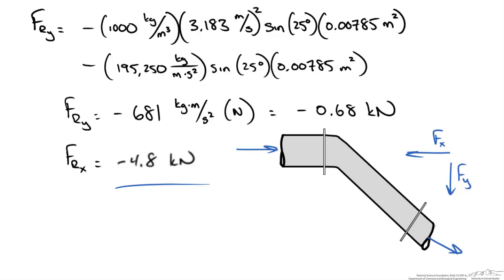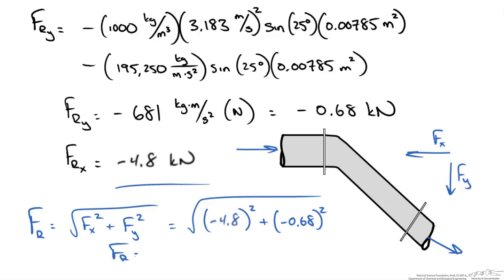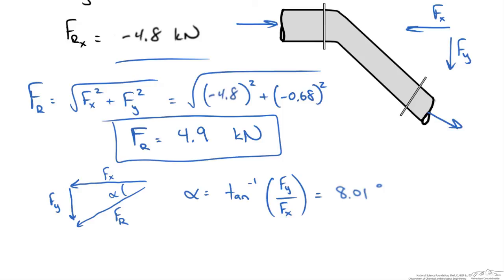To determine the total force acting on this pipe section we combine the two vectors. The total resultant force equals the square root of the force in the x direction squared plus the force in the y direction squared, giving a total force of 4.9 kN. The resultant force is applied 8.01 degrees below horizontal to the left. Hopefully this gives you an idea on how to use both the momentum balance and the energy balance together to solve these types of problems.